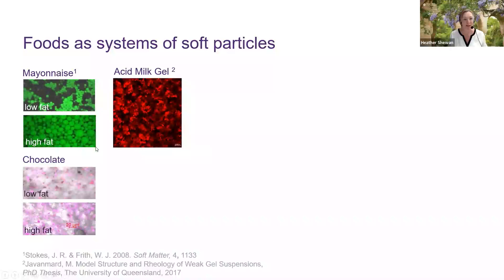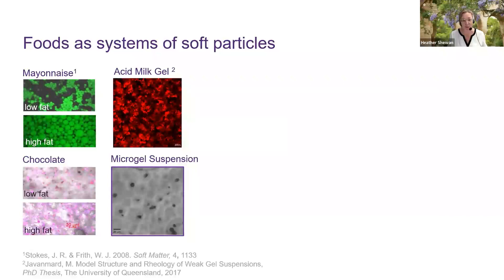What do I mean when I say foods are a system of soft particles? From these images, mayonnaise has stable emulsion droplets that behave as soft particles. Chocolate has harder particles — sugar crystals in regular shapes dispersed in a fat phase. An acid milk gel, which is a model yogurt made with acid rather than fermented, when stirred breaks up into microgel-like domains that also perform as a system of soft particles.